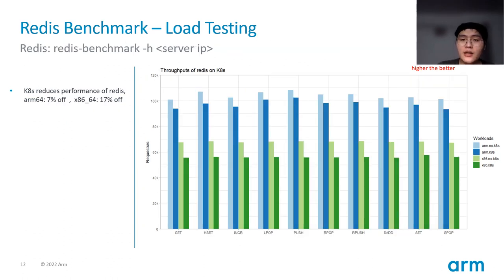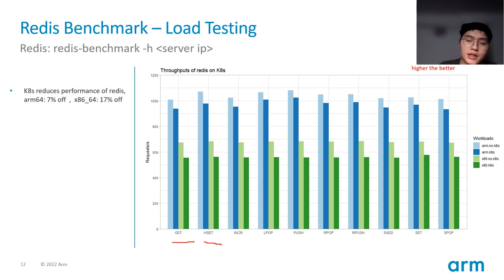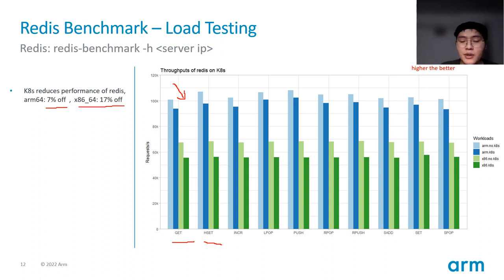The last workload test is about Redis. Redis benchmark tests some functions of Redis, such as GET and HSET. Kubernetes will also reduce the performance of Redis — by 7% on ARM and 17% on x86.